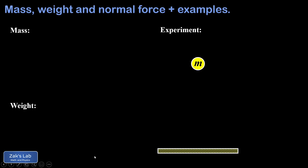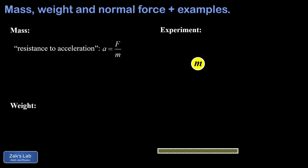Starting with mass, we can get technical and say that mass is the resistance to acceleration. This is an appeal to Newton's second law, which we could write as a equals F over m, where we can see that doubling the mass will cut the acceleration in half. Informally though, we can just say that mass is the amount of stuff that we're talking about, and the SI units of mass are kilograms.